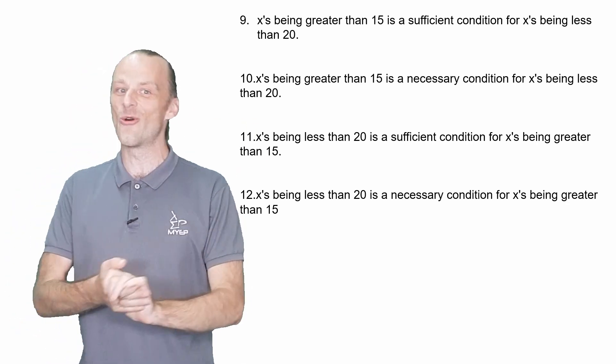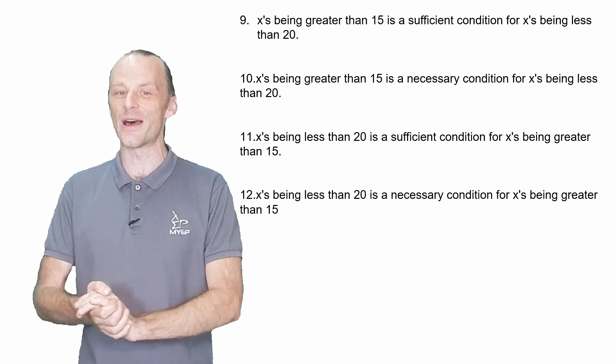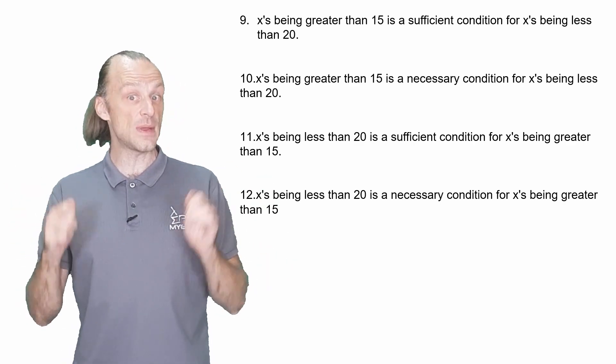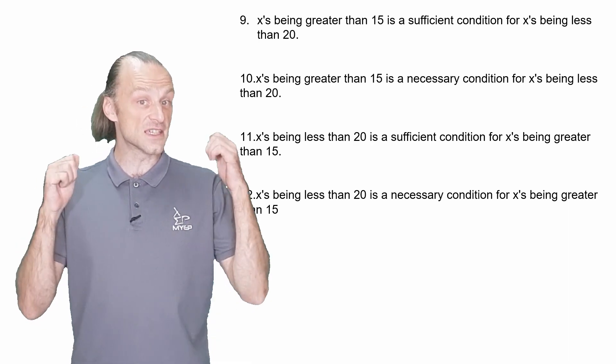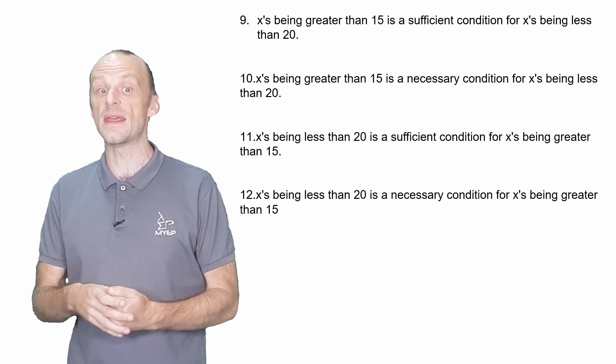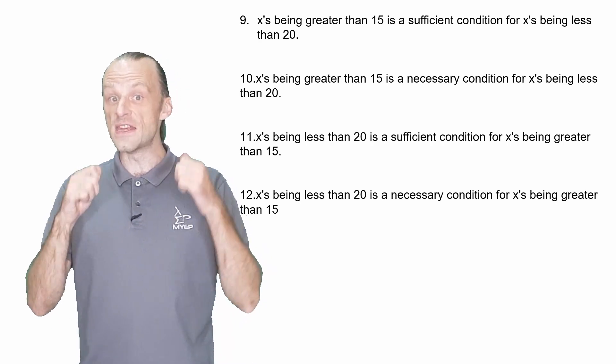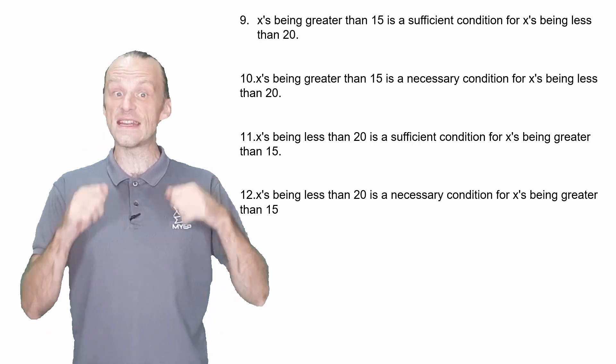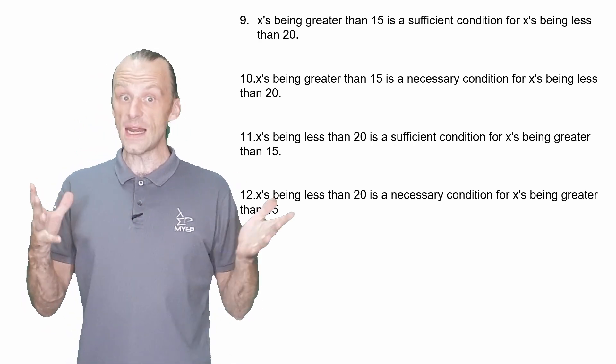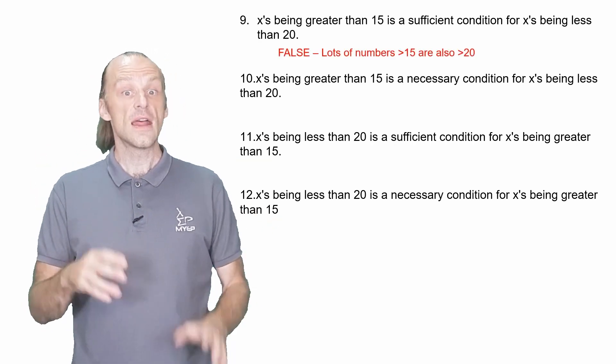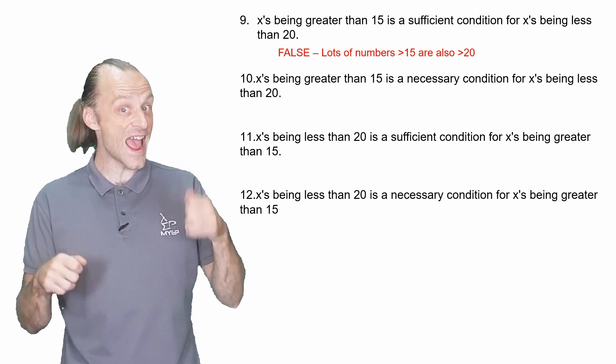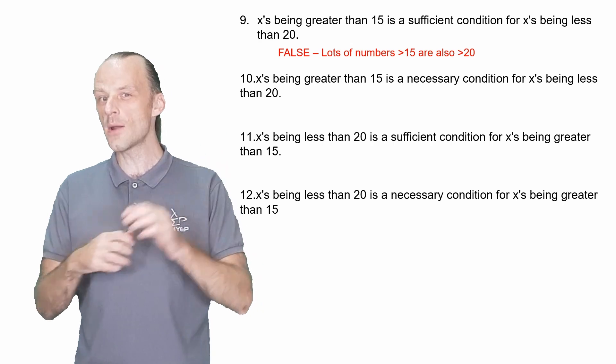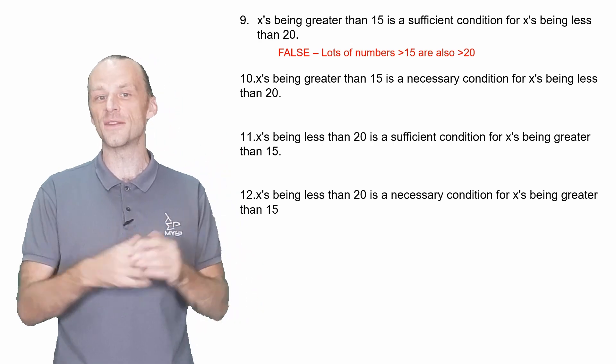Let's return to the comfortable certainty of the number line, shall we? Greater than or less than. But these examples aren't going to be completely easy either. Question nine asks, does X's being greater than 15 make a sufficient condition for X's being less than 20? In other words, if the number is greater than 15, does that guarantee that it's less than 20? Clearly, the answer again is no. There are lots of numbers that are greater than 15 and also greater than 20. But can you change one word in number nine and make this statement true?